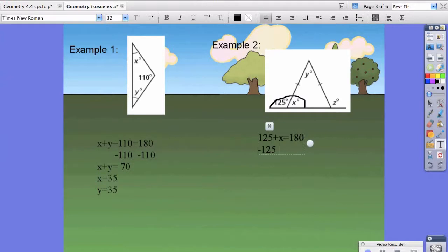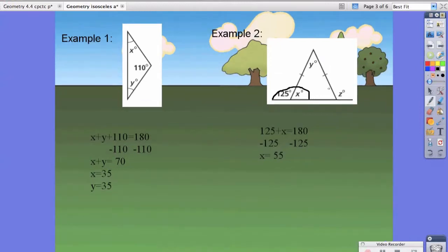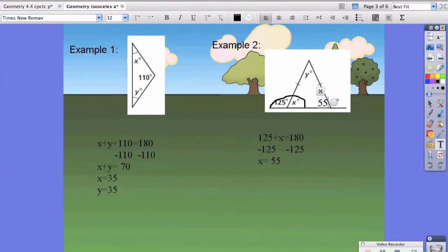If we subtract 125 from both sides, we get that X is equal to 55 degrees. Now, if X is equal to 55 degrees, then that must mean this is also 55 degrees because it's an isosceles triangle. And if that's the case, then that also means that Z is equal to 125 degrees as well.